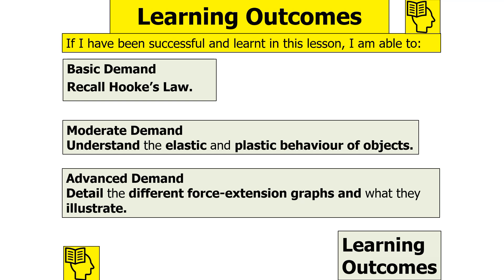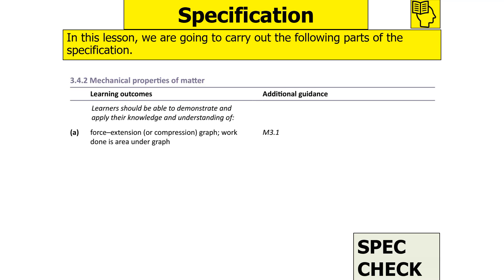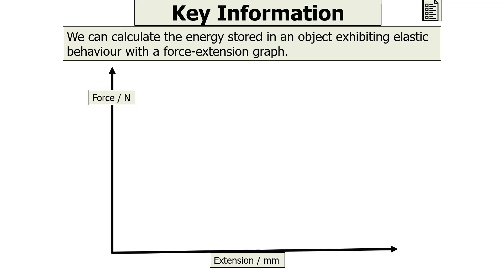We're going to be looking at the following part of the OCR A-level physics specification: 3.4.2, the mechanical properties of matter. We're going to be looking at force extension graphs and the work done being the area under the graph, so we can calculate the energy stored in an object exhibiting elastic behaviour from a force extension graph.